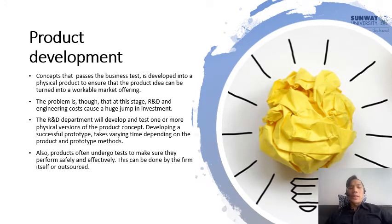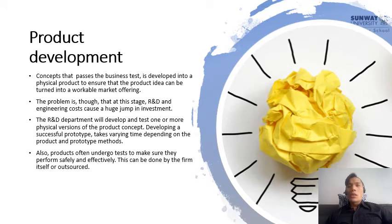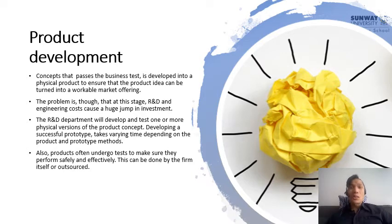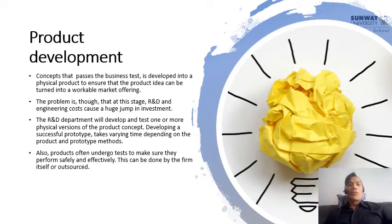When the product undergoes testing, safety is important — especially for products like cars or digestible items. All patents, certifications of fitness, and relevant authoritative certifications must be passed. For example, when creating a new digestible product in Malaysia, it must pass the food authority as well as the Halal certification.